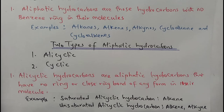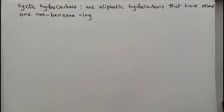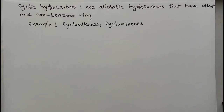Cyclic hydrocarbons are ring-like hydrocarbons, but not the benzene ring type — the benzene ring is different from these cyclic aliphatic hydrocarbons. Examples of cyclic aliphatic hydrocarbons include cycloalkanes and cycloalkenes.